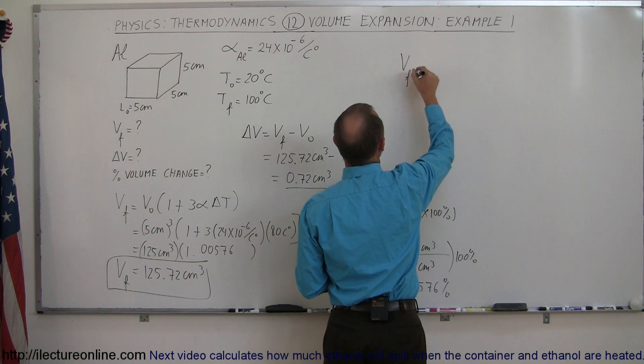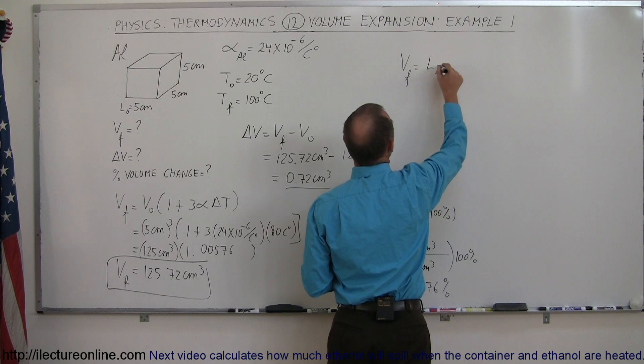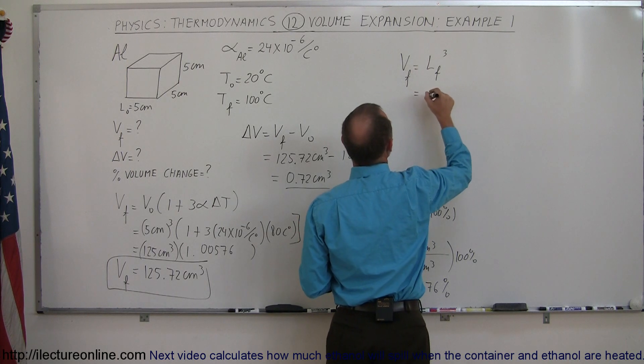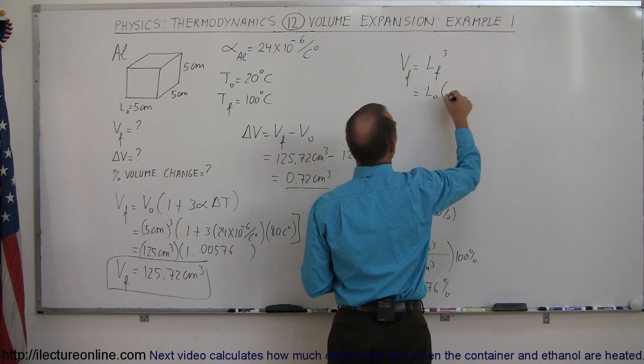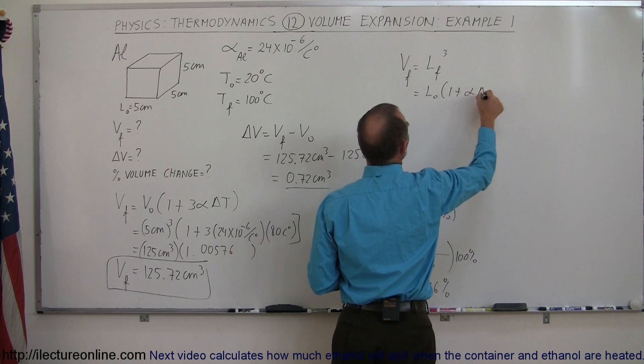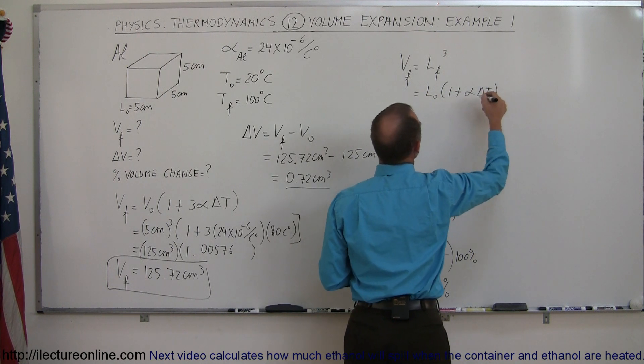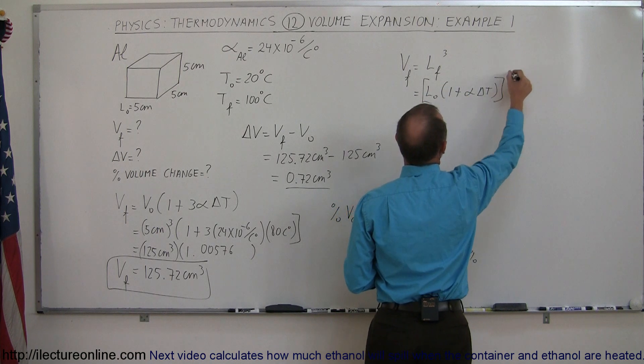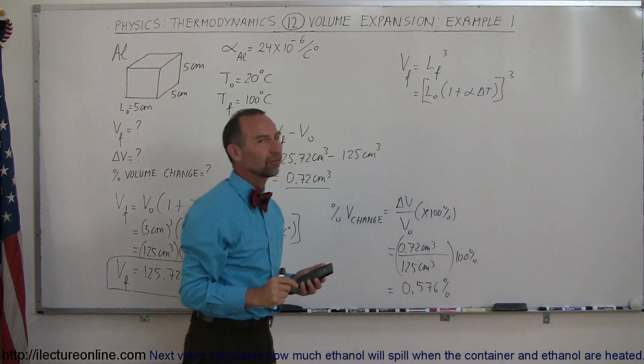So let's say we can say that V final is simply the L final cubed, and that means it's equal to L initial times 1 plus alpha delta T, and quantity cubed. So let's do that instead.